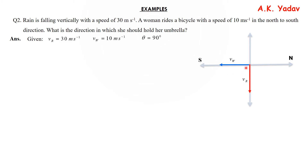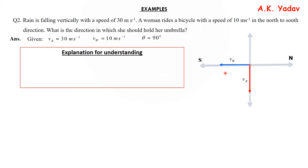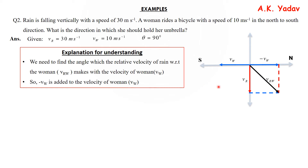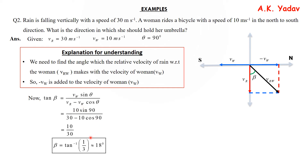We need to find the angle which the relative velocity of rain with respect to the woman makes with the velocity of rain. Minus of vw is added to the velocity of woman like this; the resultant vrw makes an angle beta. So tan β = vw·sinθ / (vr − vw·cosθ). Putting in the values: β = tan⁻¹(1/3) = 18° with the vertical towards south — that is the angle beta we are talking about.